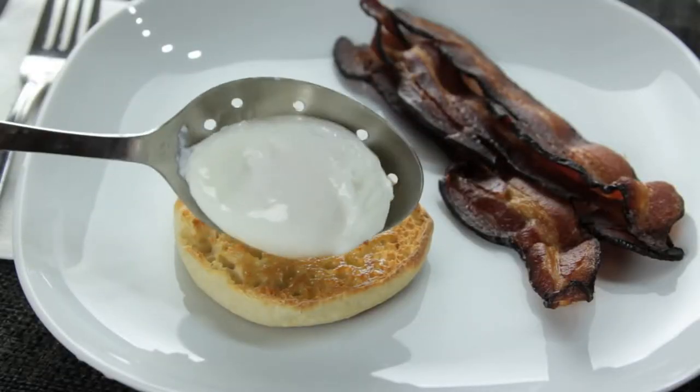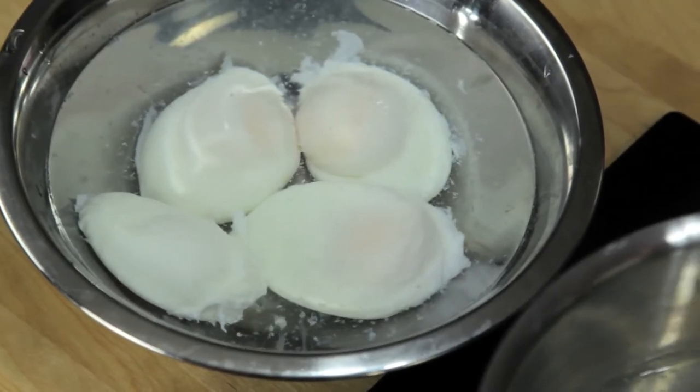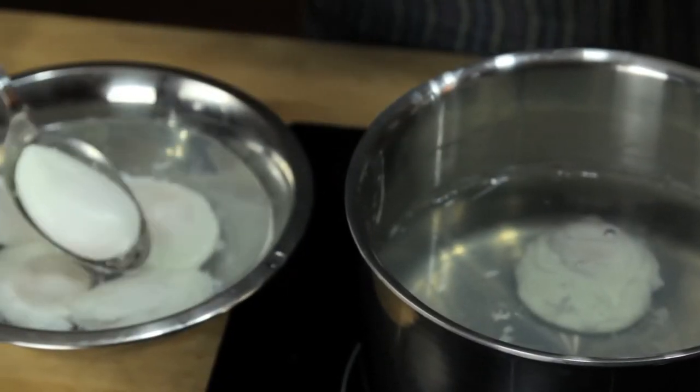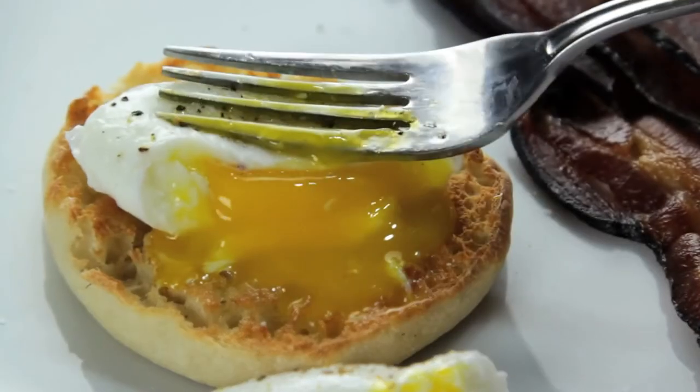After about three and a half to four minutes, this is what you've got. You can even cook them ahead of time and store them submerged in cold water in the fridge for up to a few days. To reheat them, just transfer them to a bowl of hot water for a few minutes just before serving. FoodLab signing out.